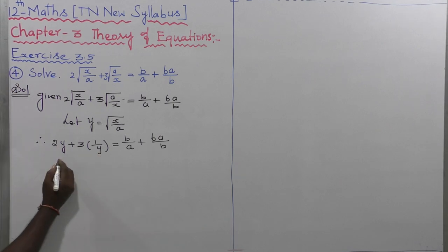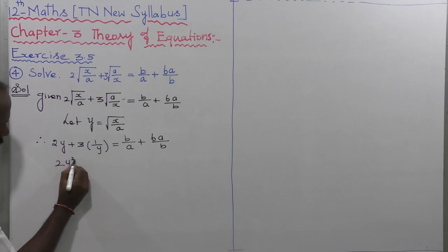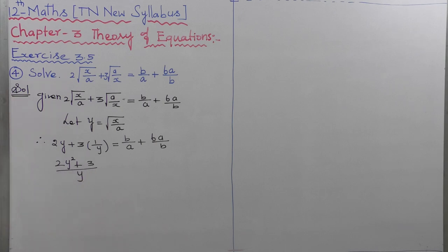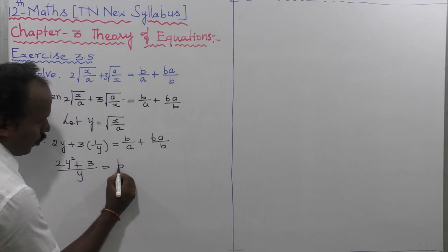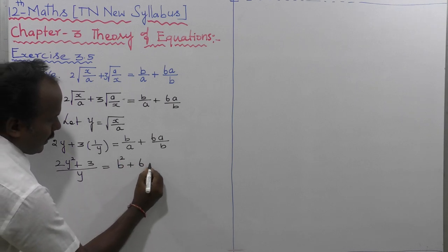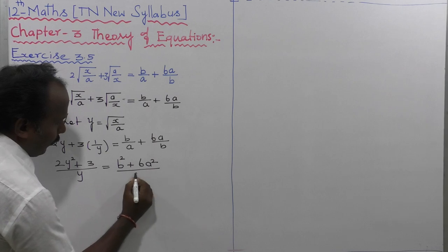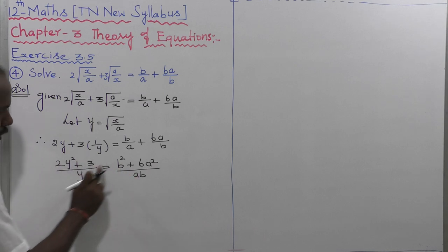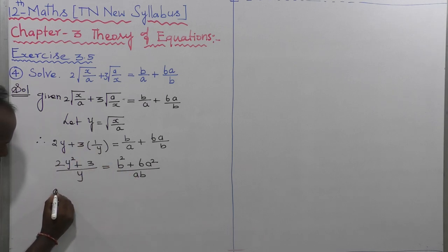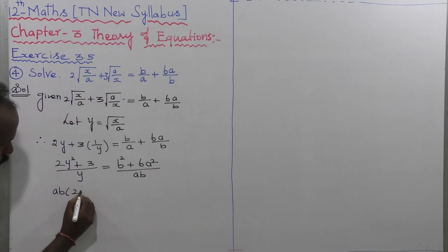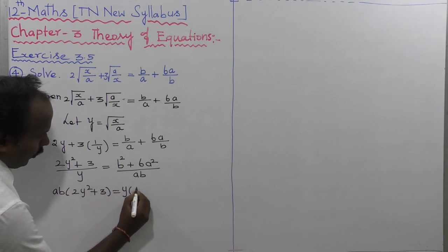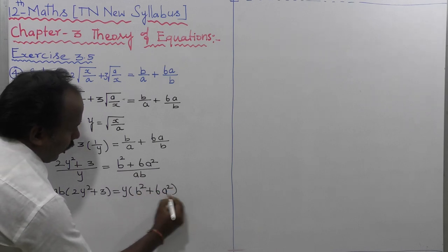Next, cross multiplication. So 2Y squared plus 3, the whole divided by Y, is equal to — this is also cross multiplication — B squared plus 6A squared, the whole divided by AB. So multiplying left side by AB and right side by Y: AB into (2Y squared plus 3) is equal to Y into (B squared plus 6A squared).